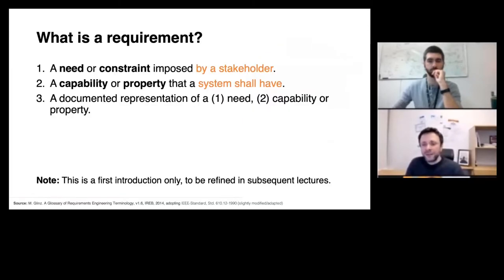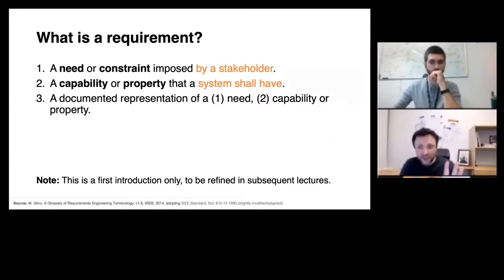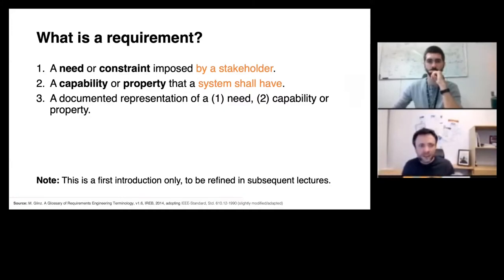But what is a requirement? Here is a rather simple definition to start with. We will refine this definition in the next lecture when we talk about different categories of requirements. A requirement is a need or constraint imposed by a stakeholder, and it's a capability or property that a system shall have. It's also a documented representation of both that need, capability, or property.